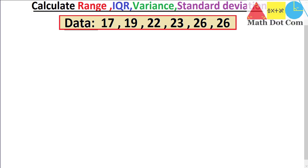Hello everyone. Today we are going to calculate all the measures of variability together in one video — that is range, interquartile range, variance, and standard deviation. Here we have a data set that is given and we just need to find all these four measures of variability using their formulas. Let's see how you can do that all in just one video and in a very short time.